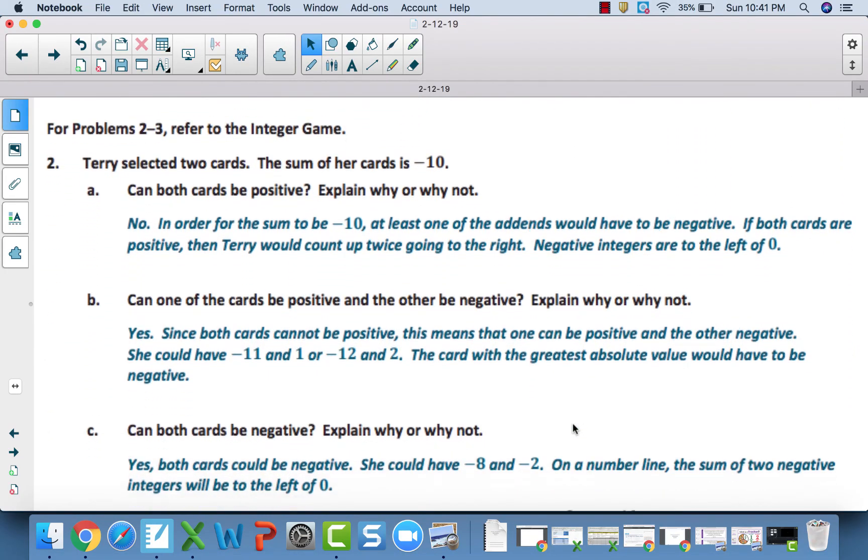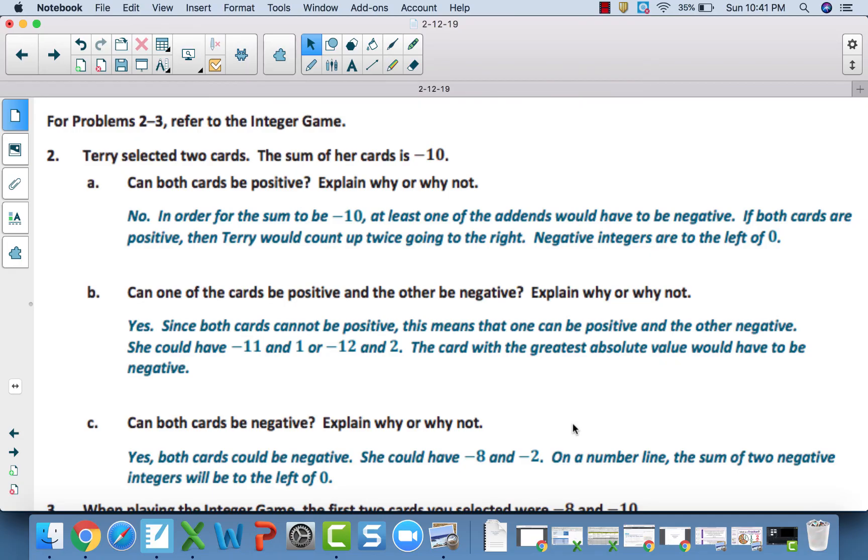Now, for 2a, the answer is no. In order for the sum to be negative 10, at least one of the add-ins has to be negative. You can't end up at a negative sum without at least one number being negative. If you have two positives, you're moving to the right or up two times. You're not even going to get into the negative numbers.